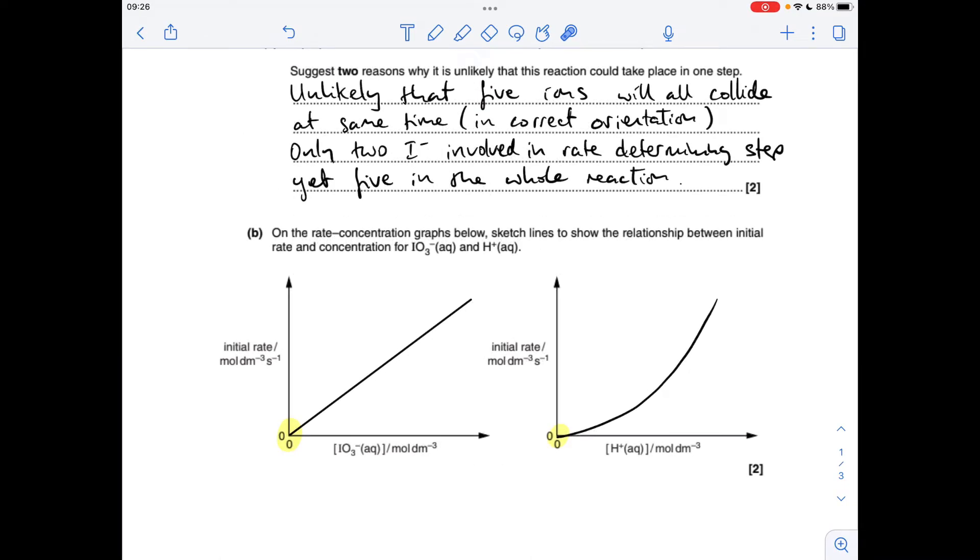The 2 rate concentration graphs. So the IO3 minus ion, it's first order, so we need to draw a straight line graph, but it must start in the origin. And the H plus ion, that's second order, so we draw a curve. Again, it has to start in the origin.